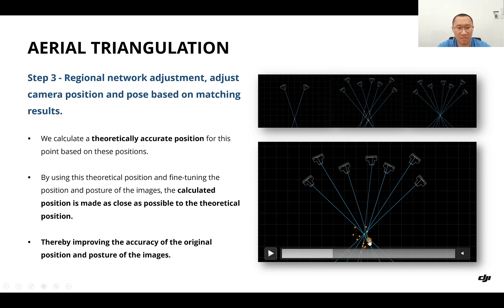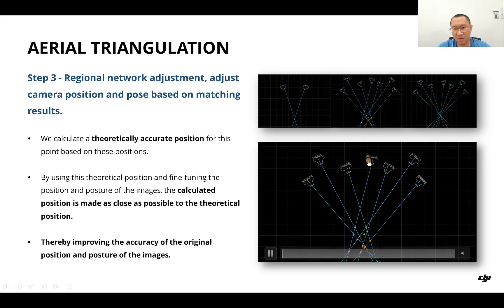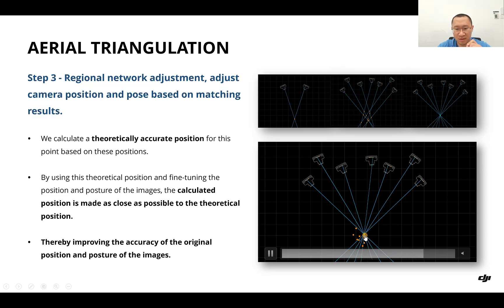By using the theoretical position and fine-tuning the position and posture of the images, the calculated position is made as close as possible to the theoretical position, thereby improving the accuracy of the original position and posture of the images. Let's see this video again. We calculate a theoretical position while changing all the images, changing their position and angle. In this way, we make all these points closer to the theoretical point, improving the accuracy of the original position and posture of the images.